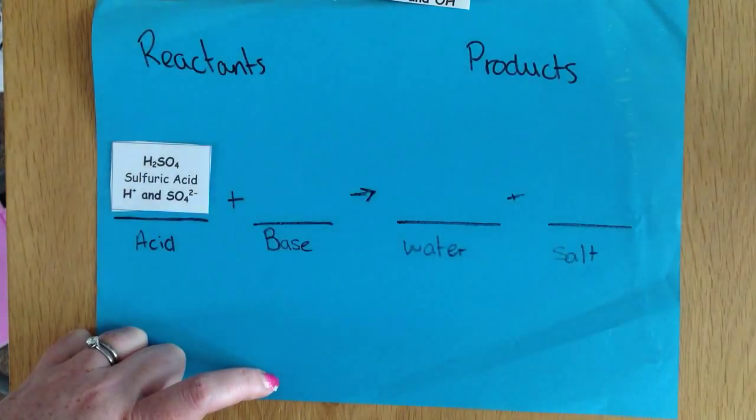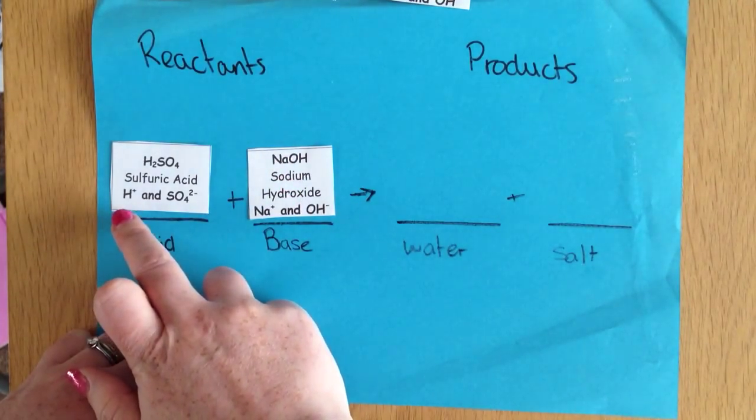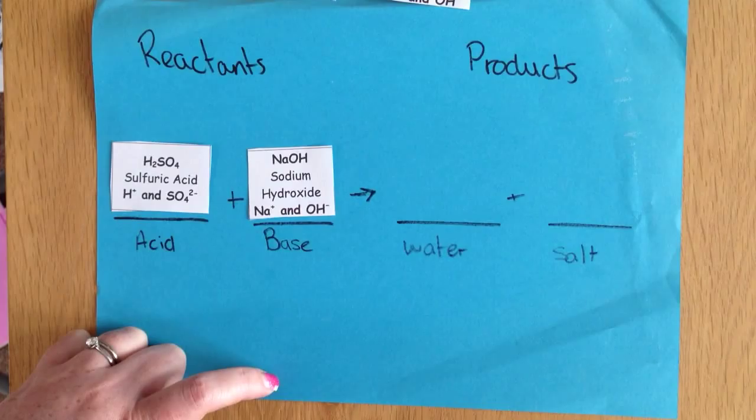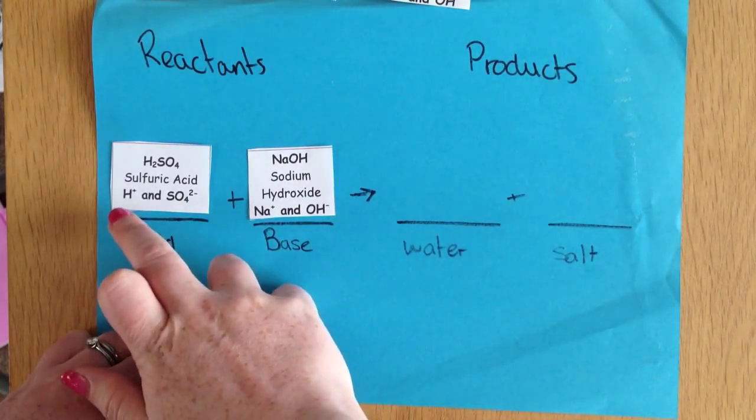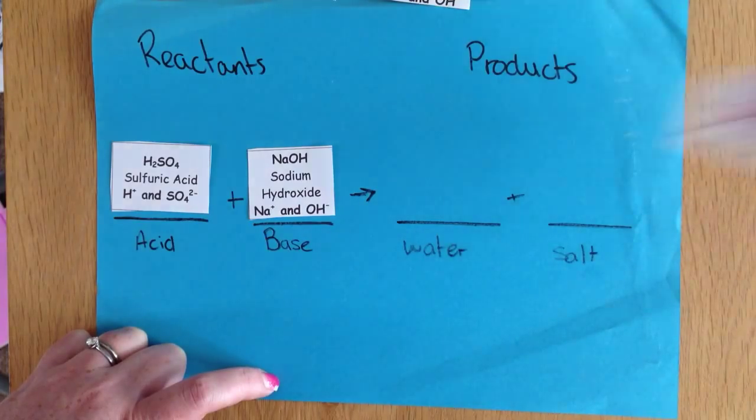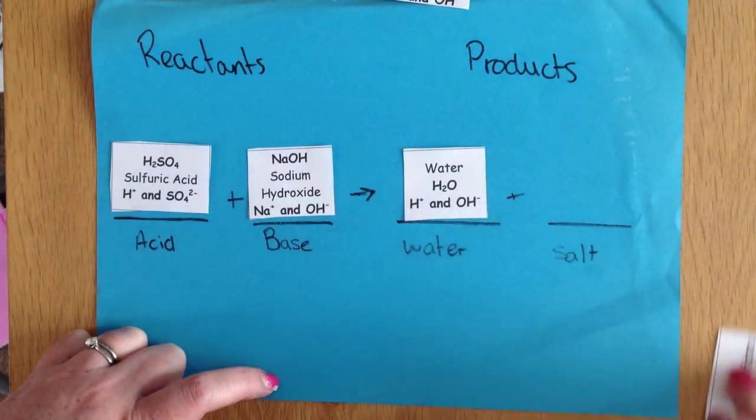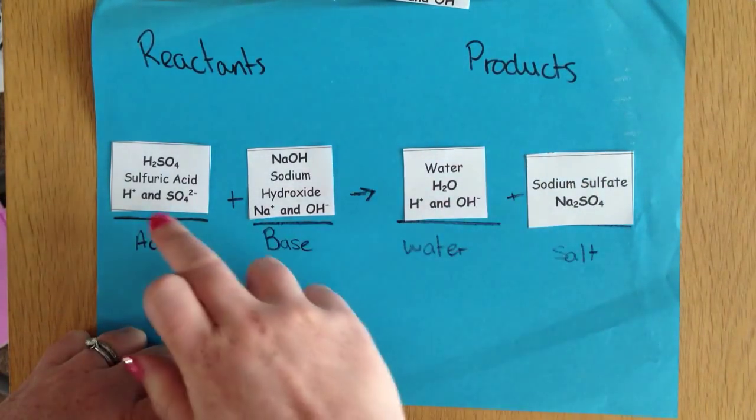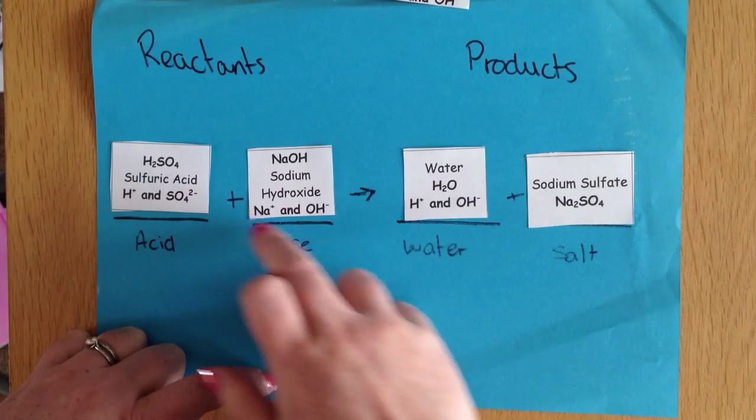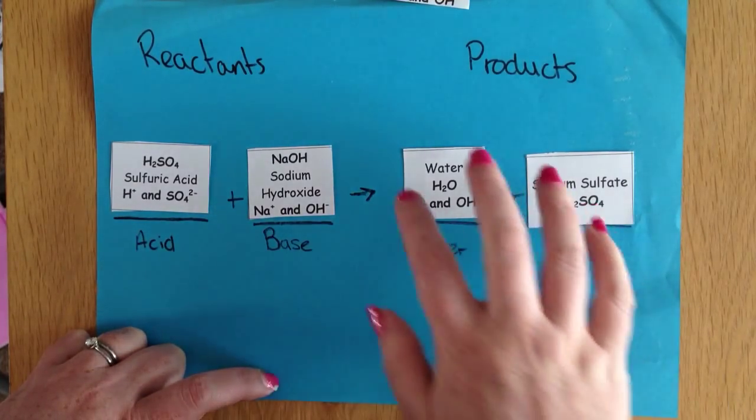Moving on to sulfuric acid and sodium hydroxide here. Again in our acid we have a hydrogen ion and in our base we have a hydroxide ion. So we pop those together and we have our water. Then we can just look at what we've got left over. The two things we have left over are our sulfate ion here and our sodium ion here. Pop those together and we are going to get sodium sulfate.